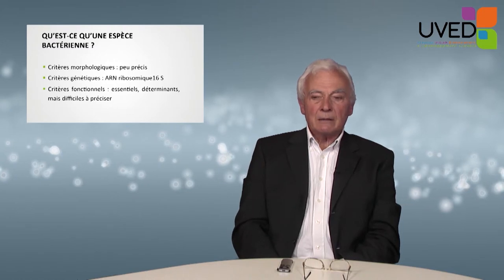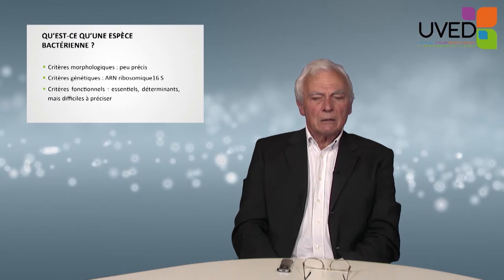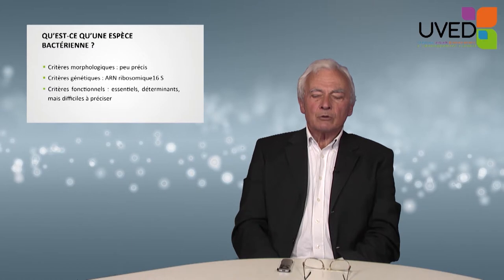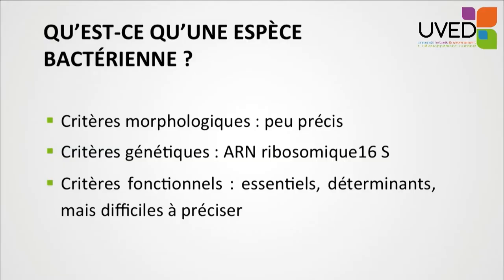One major problem is: what exactly is a bacterial species? Morphological criteria are not very accurate or useful. There are genetic criteria, and we now know how to classify bacterial species using them. But for microbiological purposes, what really matters are the functional criteria — they are essential. For instance, there are denitrifying bacteria which remove nitrogen, and bacteria producing CO2. These classifications are difficult to pinpoint and don't usually use genetic criteria — something currently being worked on. In microbial ecology, the unit is not the phylogenetic species in the animal sense, but rather the function.